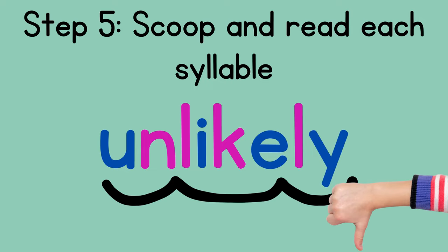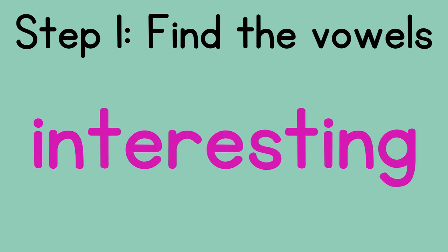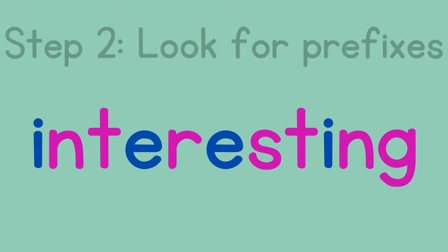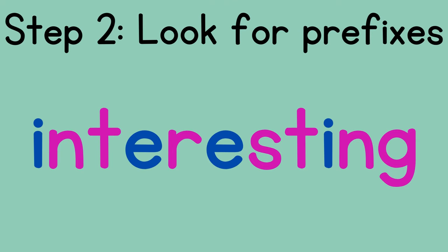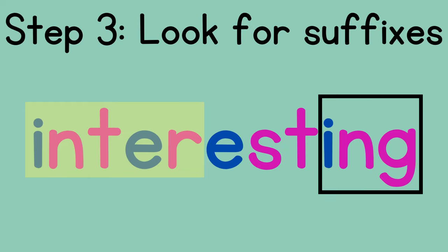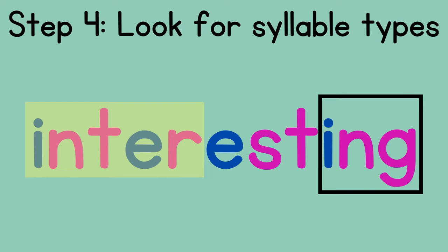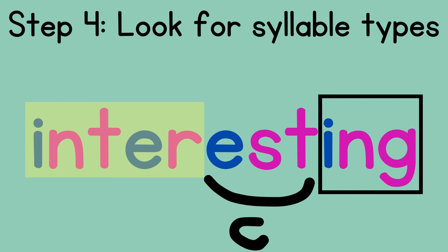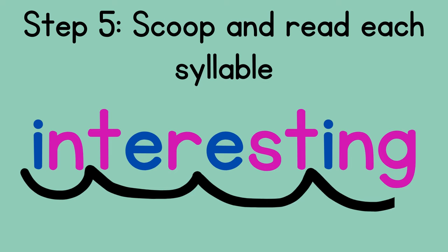Do you remember what we do first? Find the vowels. Then look for the prefixes — this word has a two-syllable prefix: 'inter.' What do we do next? Look for suffixes — this word has 'ing.' Fourth, we look for syllable types. We only have 'est' left, which is a closed syllable. Let's scoop and read: in-ter-est-ing — interesting.